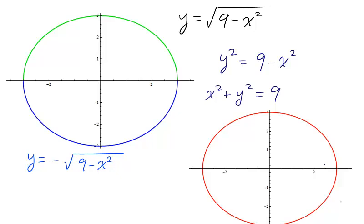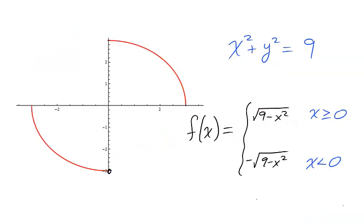The equation of a circle, though not a function, defines two functions: the function of the top semicircle and the function of the bottom semicircle. In fact, there are multiple functions implied by the circle equation, not just our two examples.